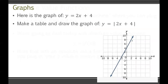Let's see what the implications of this are. Here is the graph of 2x plus 4 — just a linear equation with slope 2 and y-intercept 4. Now I want you to make a table and draw the graph of y equals the absolute value of 2x plus 4. Making a table helps us illustrate what's really going on, so let's start to the left of the x-intercept.